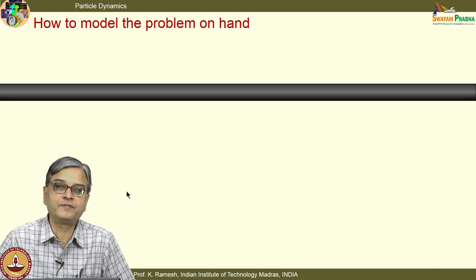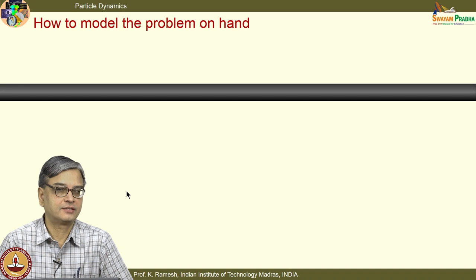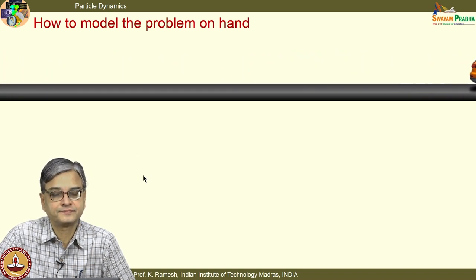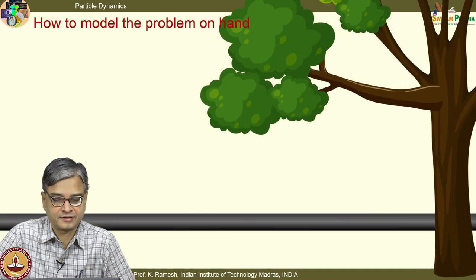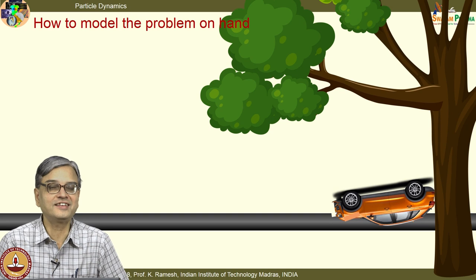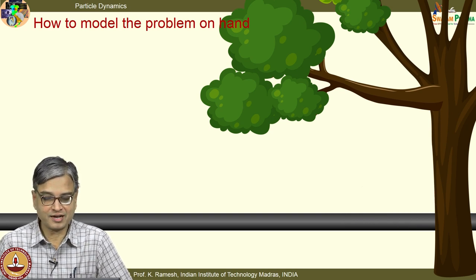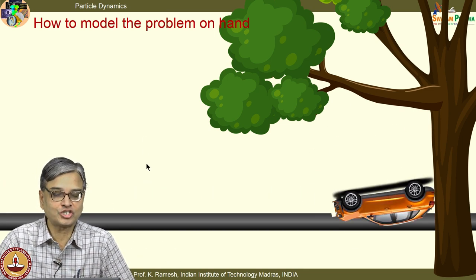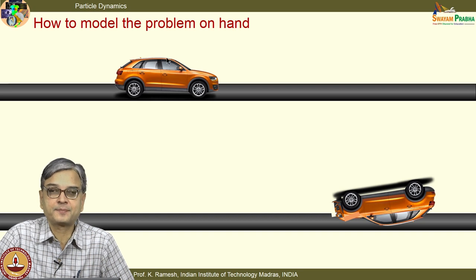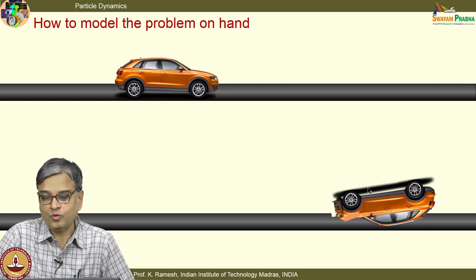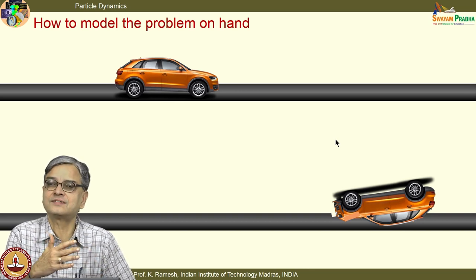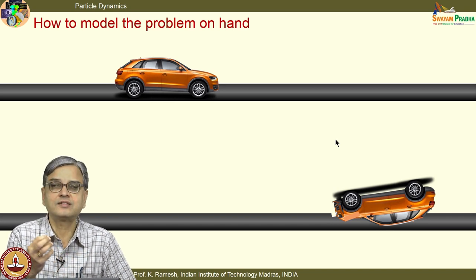In this course, I have always tried to give importance to modelling to the extent possible. I have a situation like this: a car is travelling on a road. I have another situation — it is very unfortunate that this car is met with an accident. I would like you to observe what happened to the car. How do I model it for the purpose of analysis? What is the minimum requirement to model the situation? You can always complicate the problem, but engineers have to solve problems with suitable idealizations.